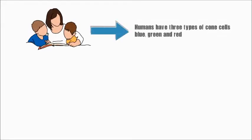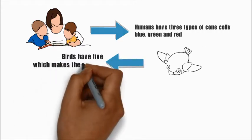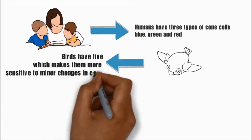For example, humans have three types of cone cells: blue, green, and red, while birds have five, which makes them more sensitive to minor changes in color.